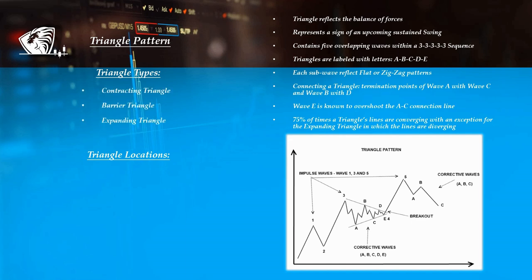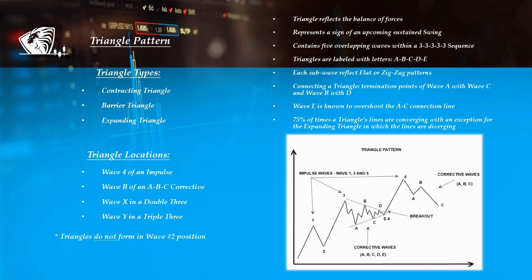Triangles come in three types: contracting, barrier, and expanding. Triangles are located in a wave 4 of an impulse, wave B of an ABC corrective, wave X in a double 3, or wave Y in a triple 3. A very important rule and guideline when counting waves is that triangles do not form in a wave 2 position and represent a continuation pattern for the dominant trend.